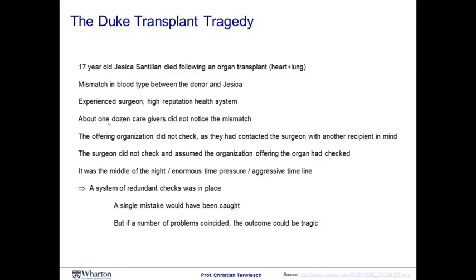In the aftermath of Jessica's death, a group of experts were put together to assess what went wrong in this process. They estimated that about one dozen caregivers had the opportunity to notice the mismatch. Typically, a single mistake in this type of process would have been caught. If one person forgets to check the blood type, well, there are 11 others who could have noticed. But if 12 people at the same time all make a defect at once, the outcome is tragic.